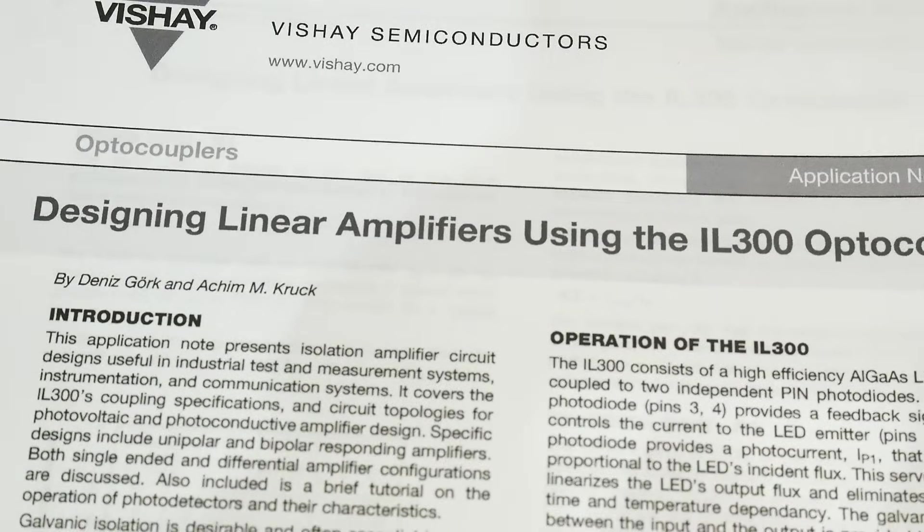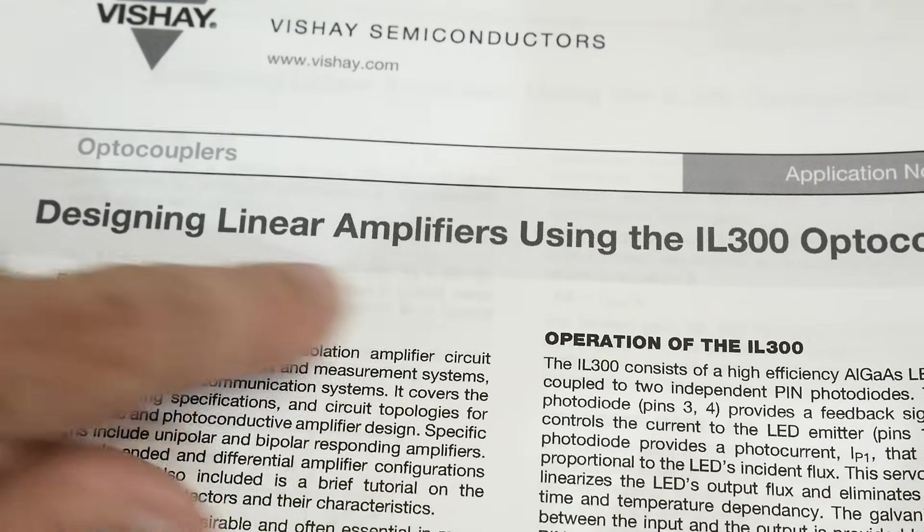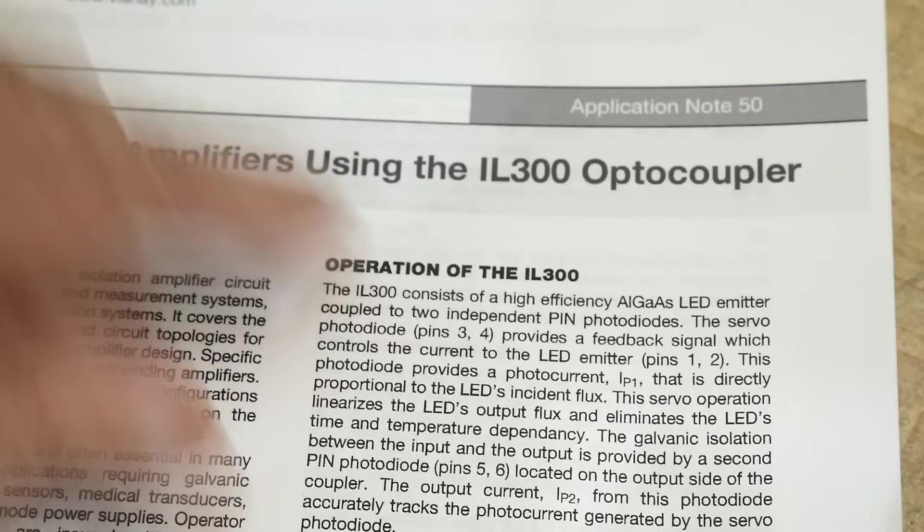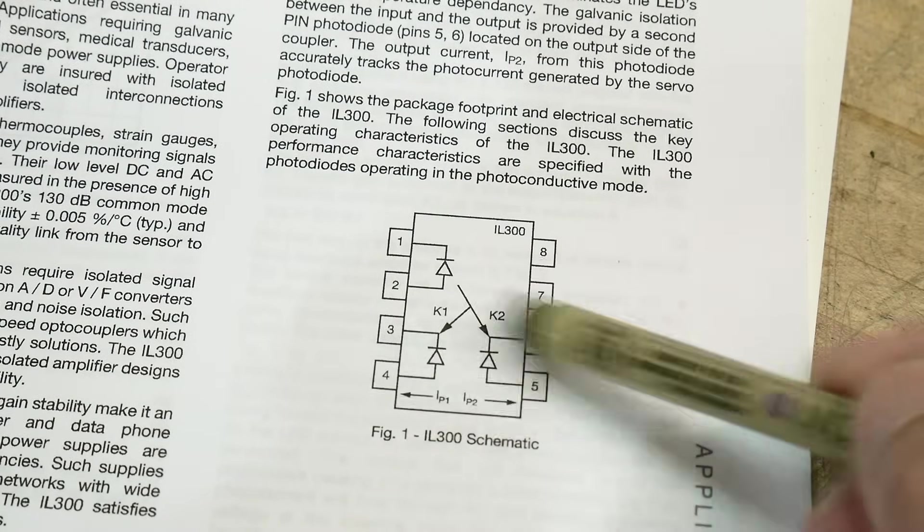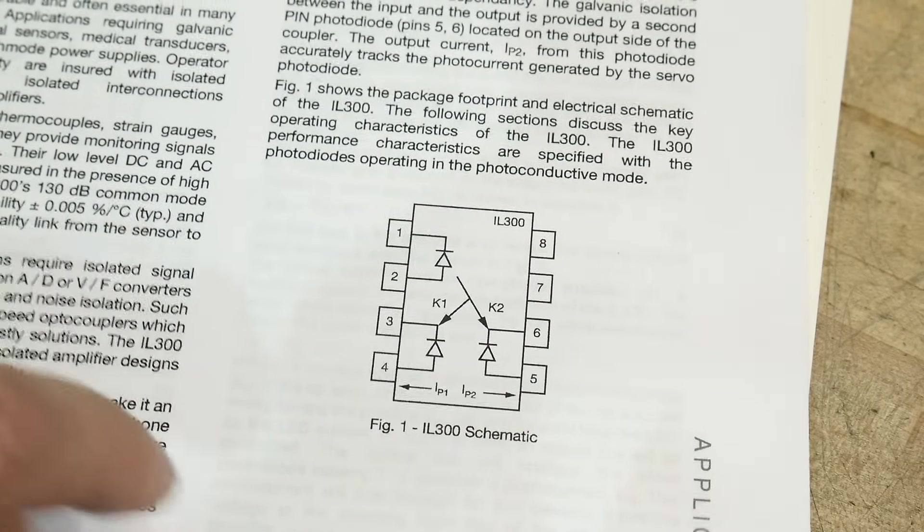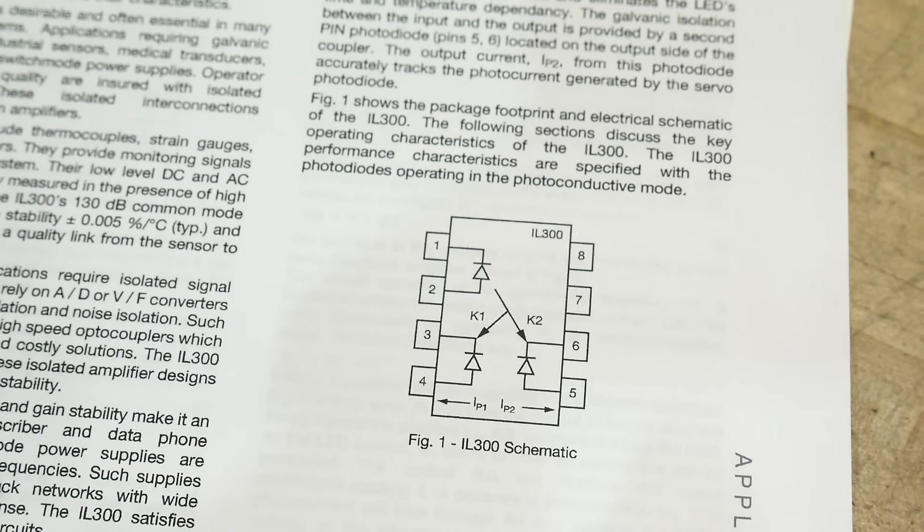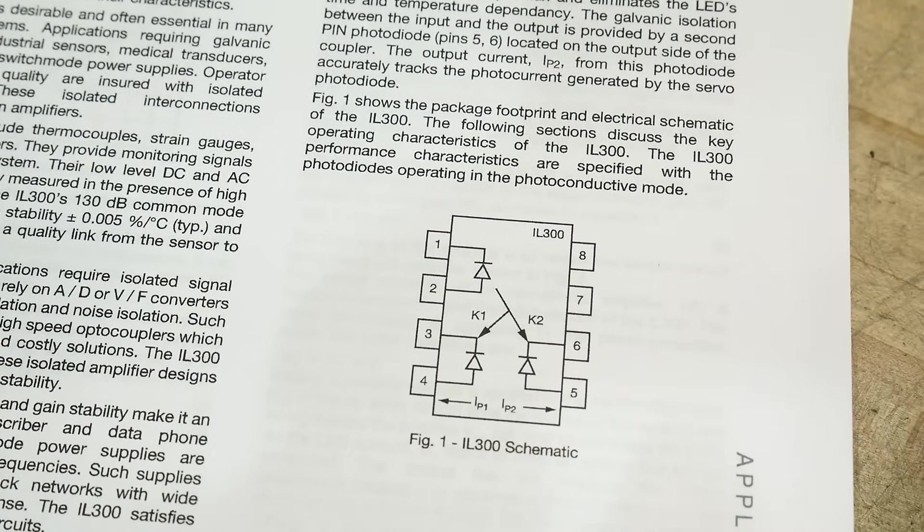Then there's some circuits that are a little bit interesting. You can read that one. They did a very long app note on linear amplifiers using an IL 300, which is the same part. So one photodiode and two photodiodes. LED and photodiodes.